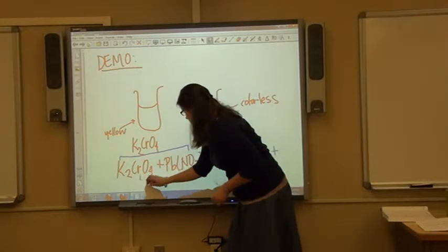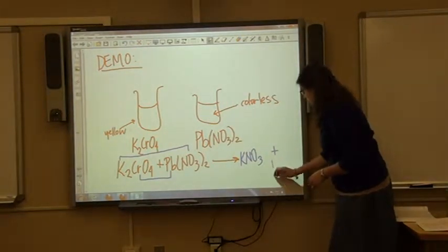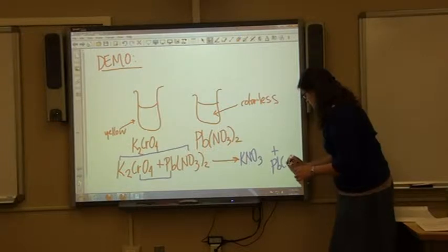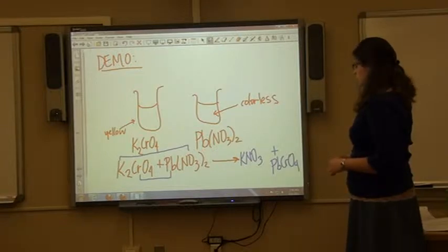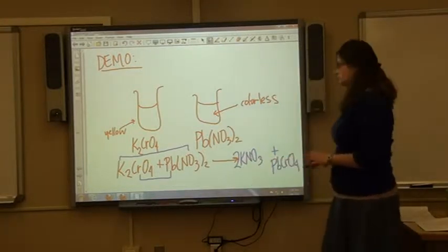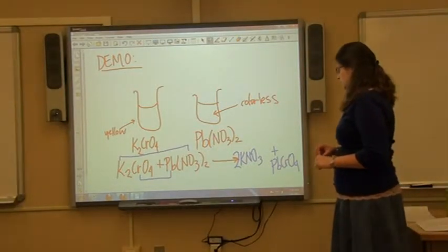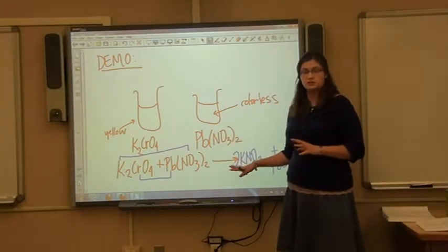Then take your inside two species — the lead and the chromate ion. Lead has a plus two charge and chromate has a minus two. This is what you'll form, and in order to balance your equation you need to put a two in front of the potassium nitrate.